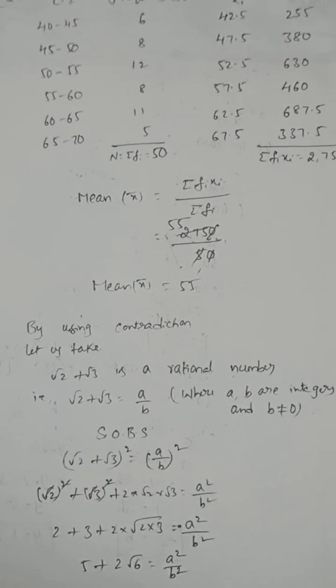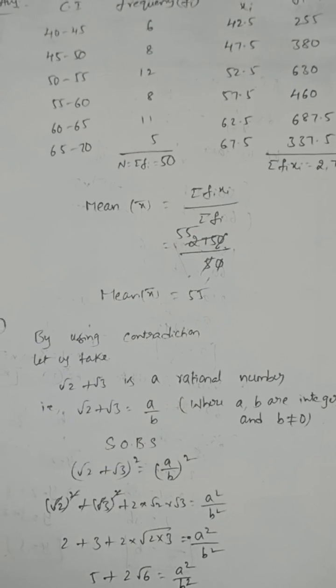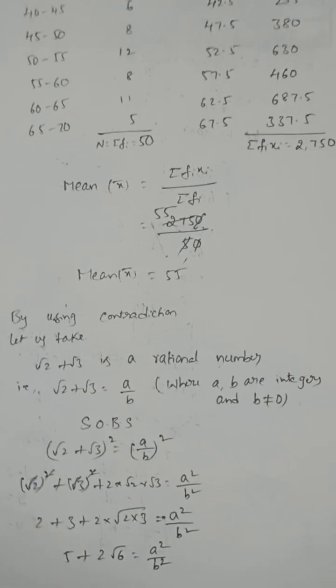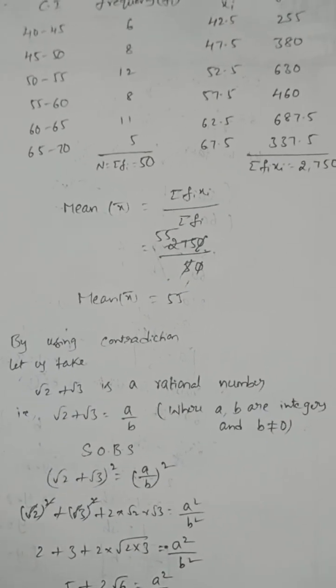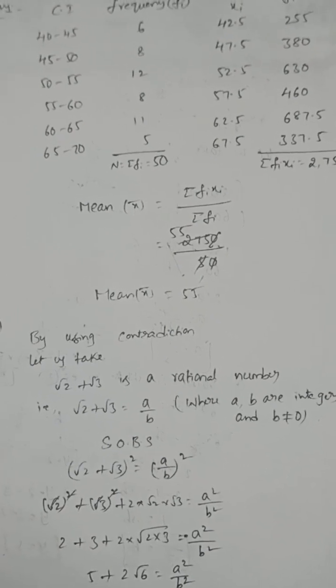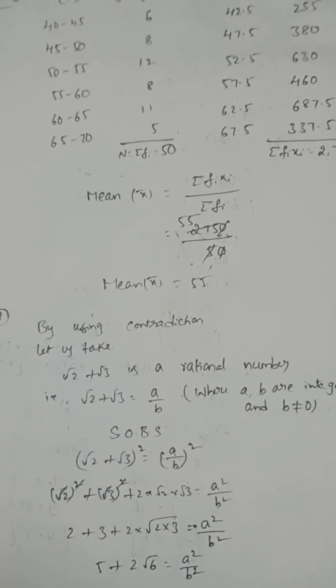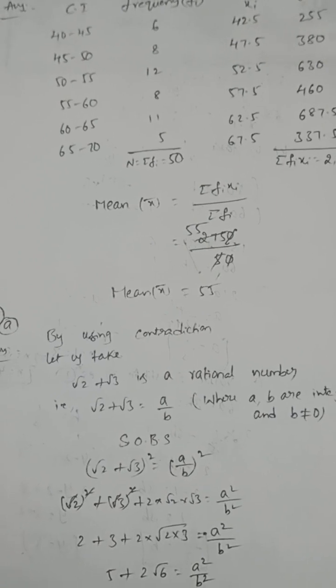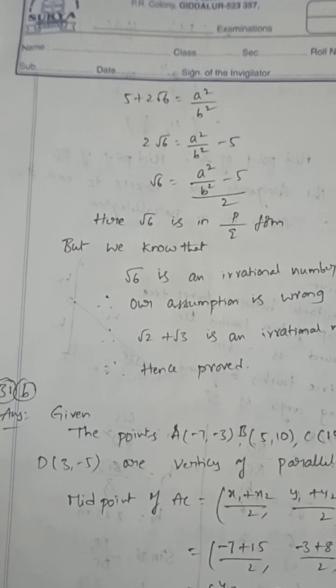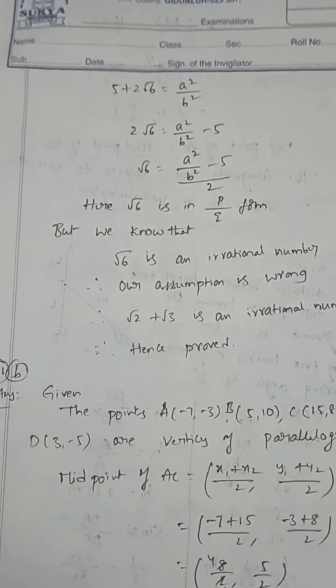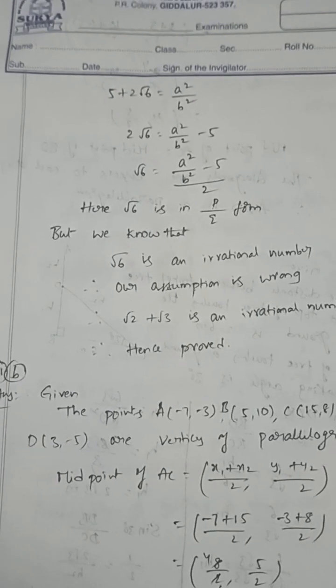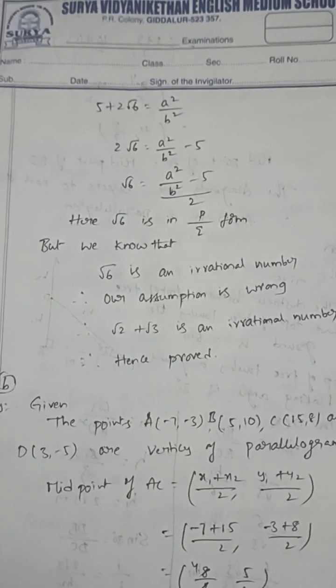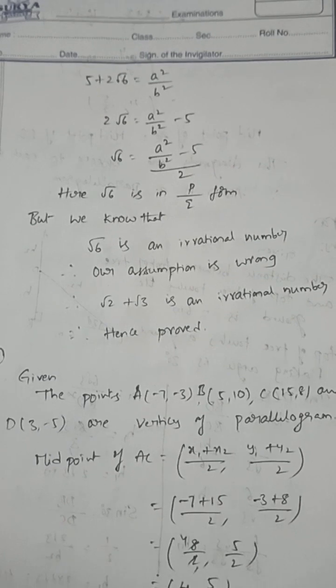Prove that √2 + √3 is an irrational number by using contradiction method. Let us assume √2 + √3 is a rational number, so √2 + √3 = a/b. Square both sides: 5 + 2√6 = a²/b². So √6 = (a² - 5b²)/(2ab). √6 is in the form of a/b. But we know √6 is irrational. Our assumption is wrong. Therefore, √2 + √3 is an irrational number.